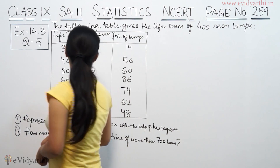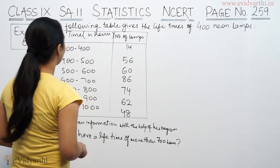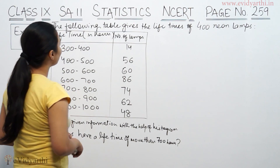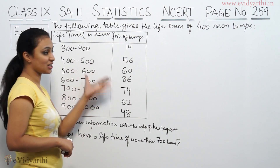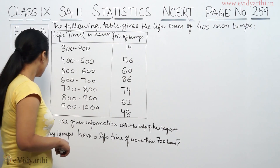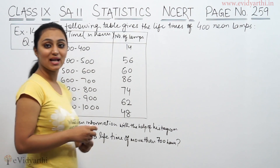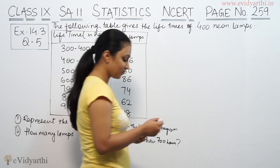The following table gives the lifetimes of 400 neon lamps. We need to represent the given information with the help of a histogram.